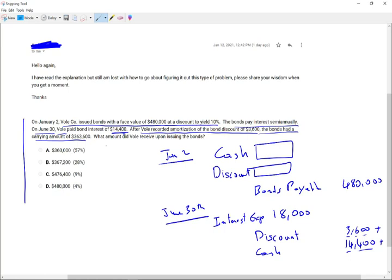And we know that the carrying value of the amount after the first payment is $363,600. What amount did Vol receive upon issuing of the bond? So the question is this one here, what amount did they receive when they issued the bond? Now, first of all, once you understand it's a discount bond, once you understand it's a face value of $480, it means it was issued less than $480. So immediately, I could eliminate D. It cannot be issued at $480 because they told me in the problem, it's issued at a discount.